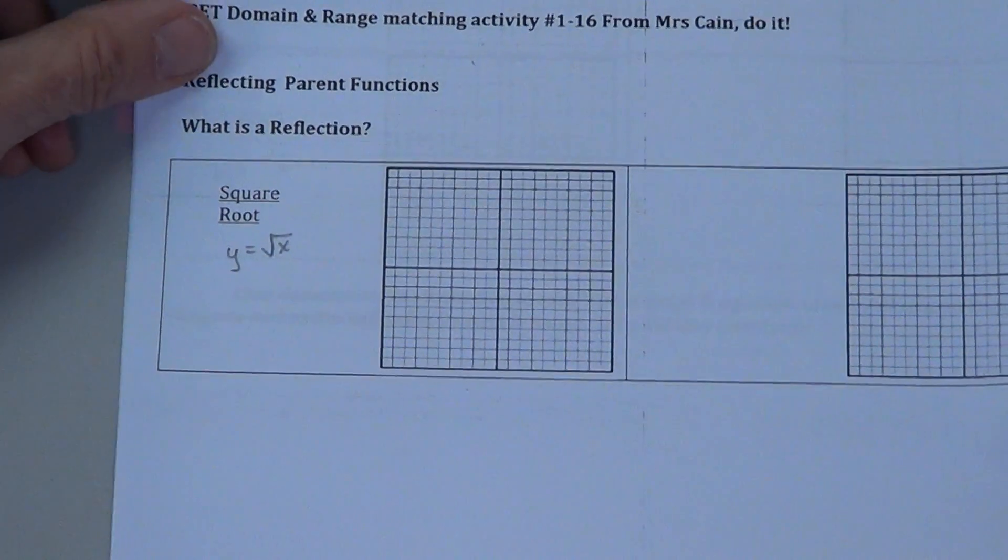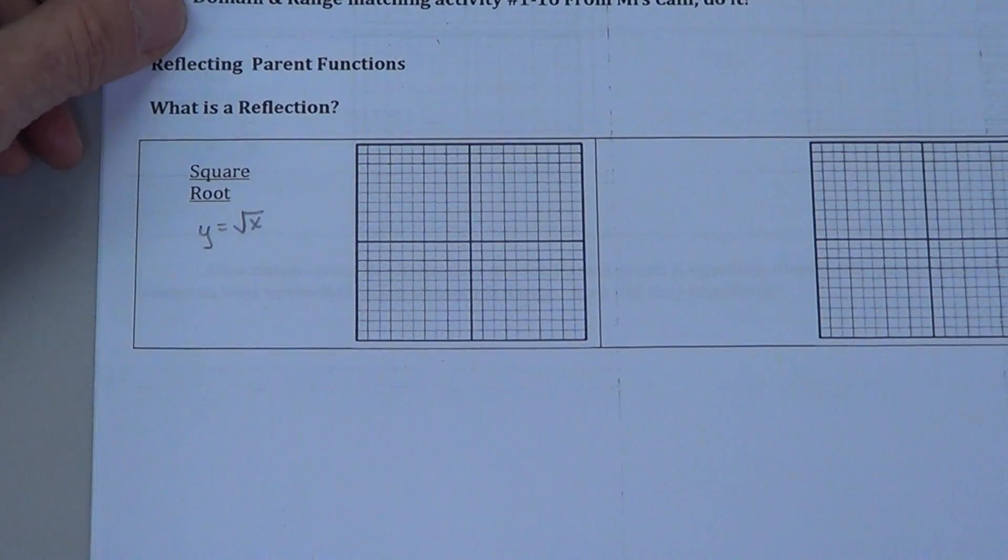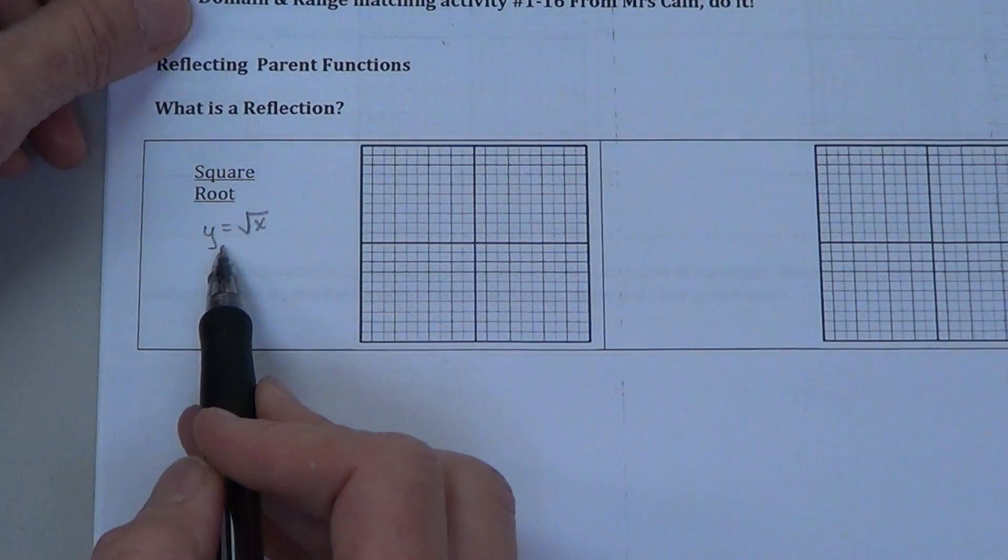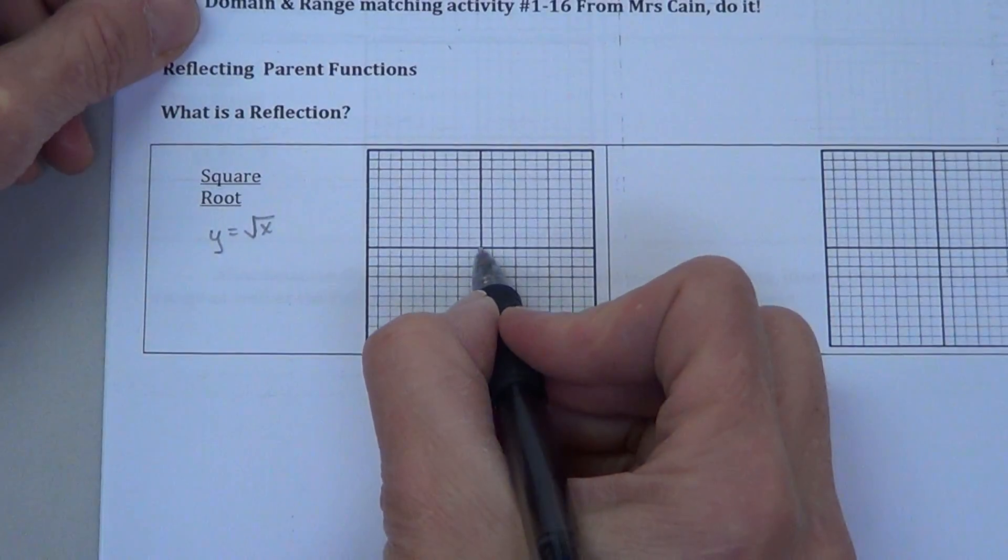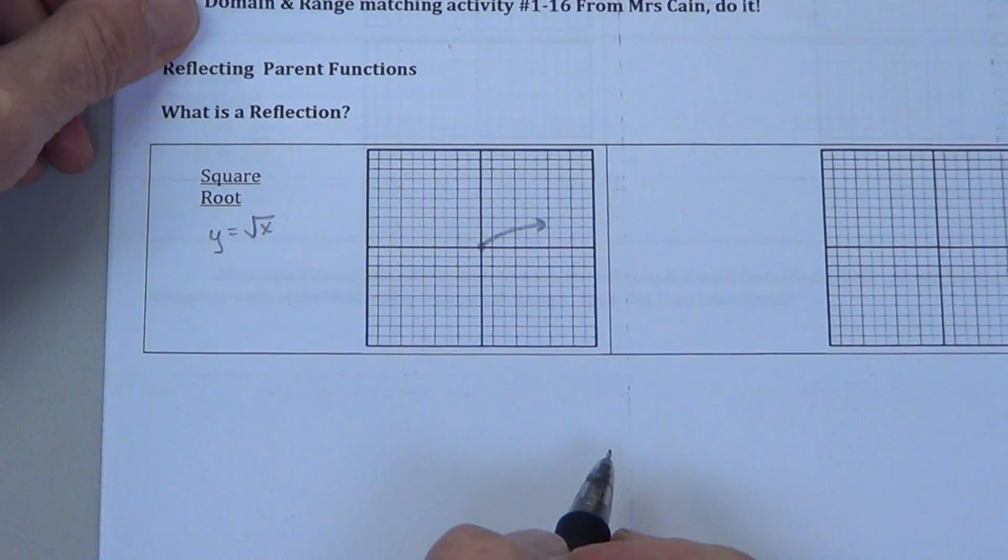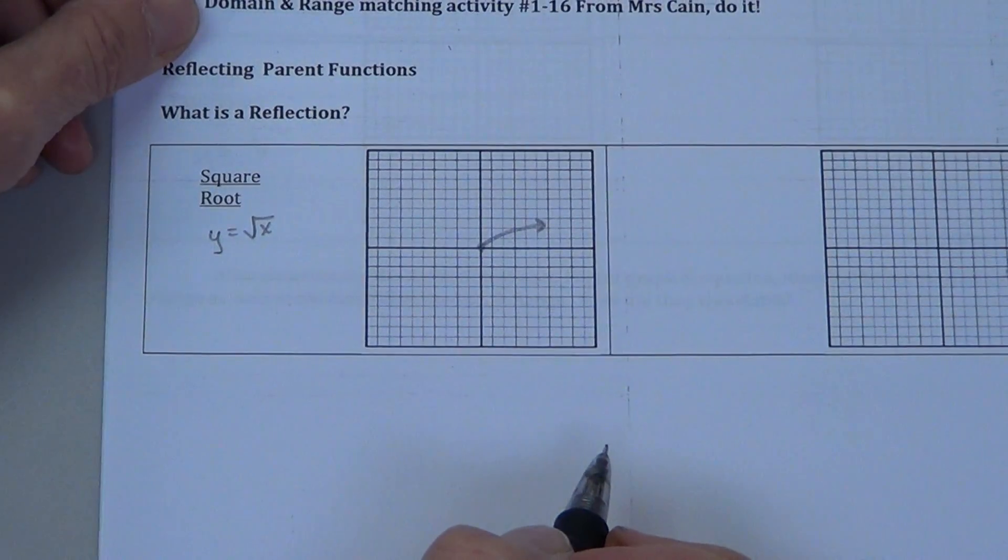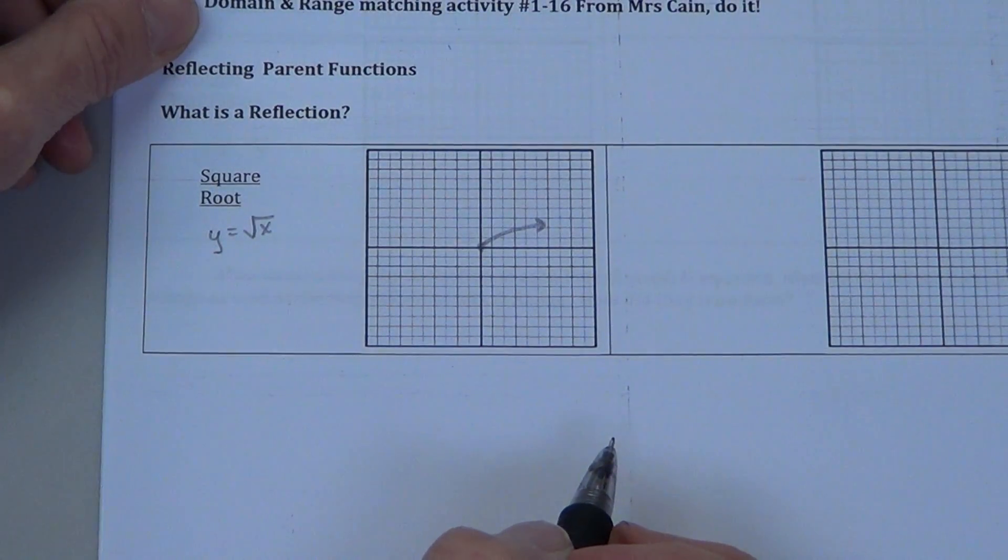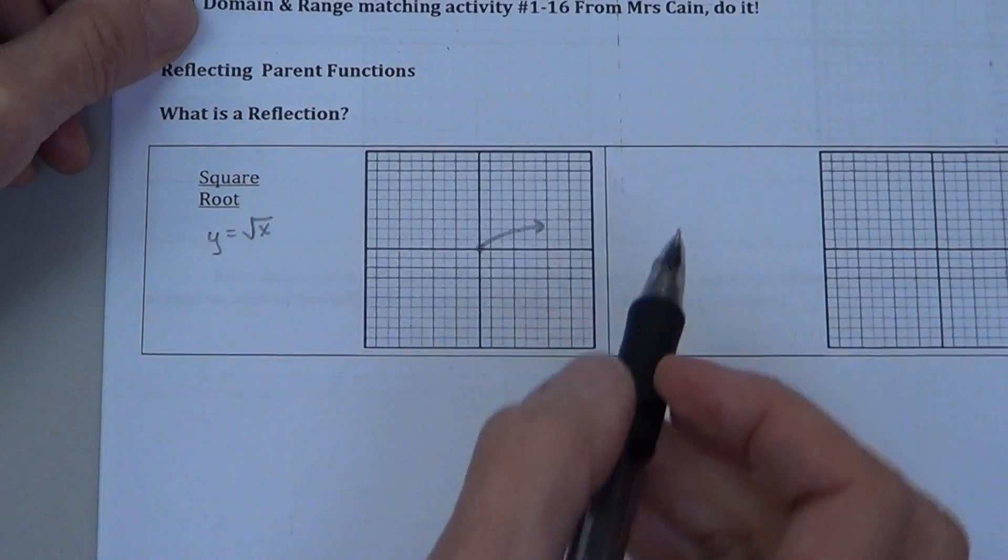Down at the bottom of page 5, I just want to go over reflecting parent functions. You've got square root, go ahead and write your square root parent function. You probably already have memorized that this looks like a hook like that. Now, we want to reflect that.